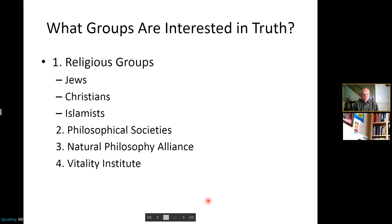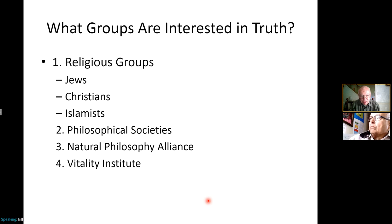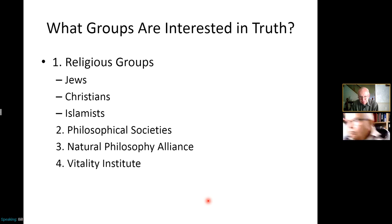What groups are interested in truth? You've got religious groups like Jews, Christians, and Islamists. You've got philosophical societies — the Natural Philosophy Alliance and the Chappell Natural Philosophy Society. You've got people interested in health, like the Vitality Institute, asking what is the cause of disease and what is the proper way to fix it. But these groups are not in control of the scientific method. We're considered alternative or radical scientists by the people who are controlling things. But there are people who think we ought to be more interested in truth, not just approximations.